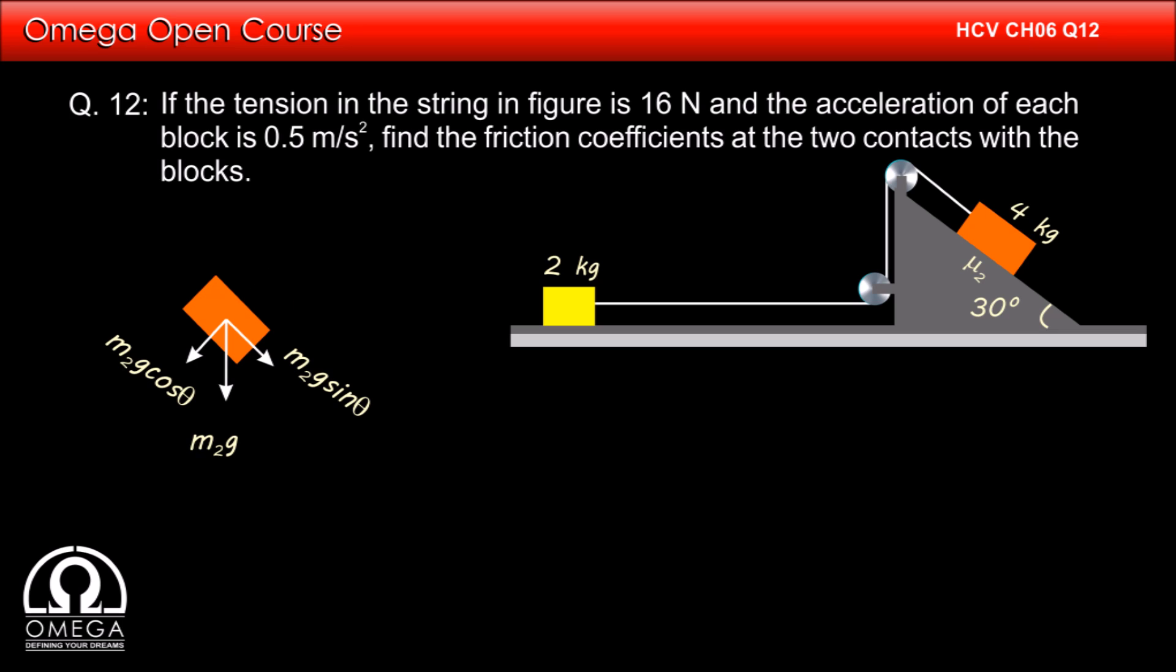Normal contact force N₂ is acting perpendicular to the incline. Tension T in the string is pulling the block up along the incline. Friction force with magnitude μ₂ into N₂ is acting up the incline.